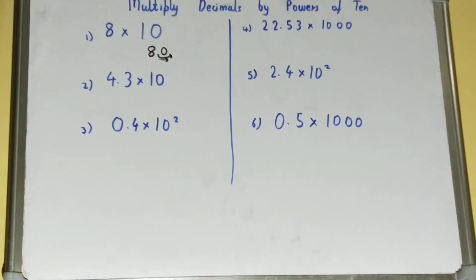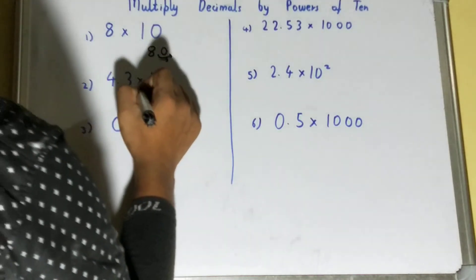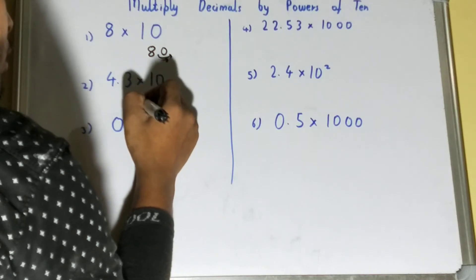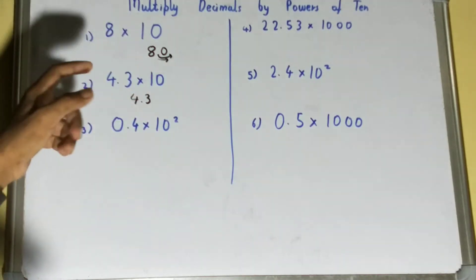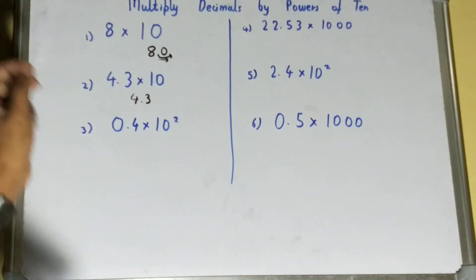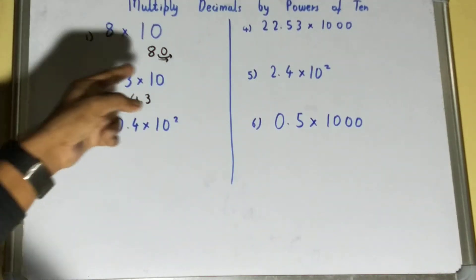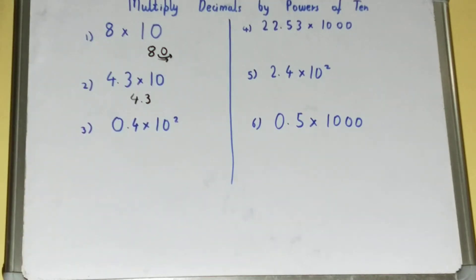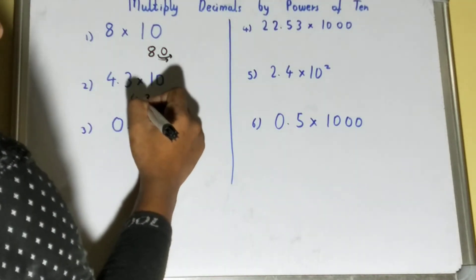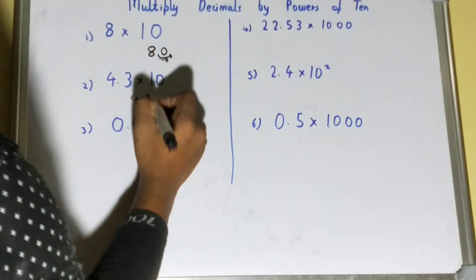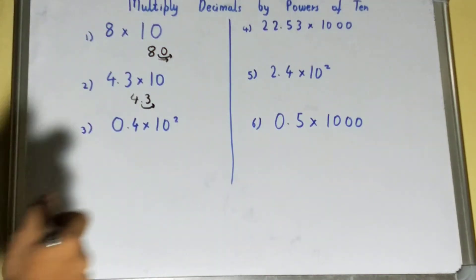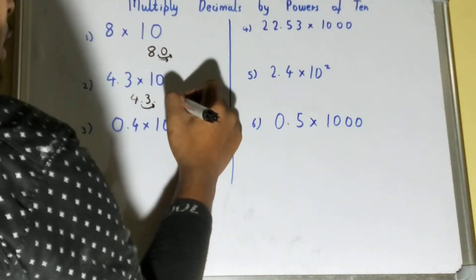Let's see the next one to be more clear. We have the number 4.3 multiplied by 10. We'll see how many zeros are there in the multiple of 10 — only one zero. So we move one decimal place to the right, and your 4.3 becomes 43.